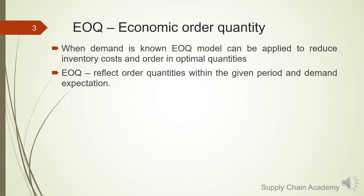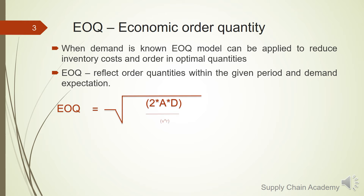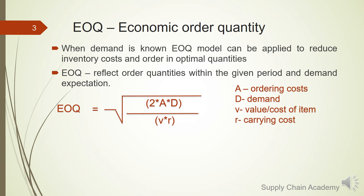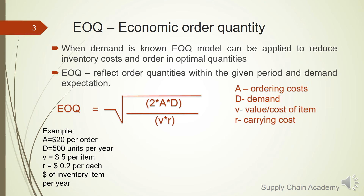Let's see the formula for calculating EOQ: it is the square root of (2 × A × D) divided by (V × R), where A is ordering cost, D is demand, V is the value or cost of the item, and R is carrying cost.